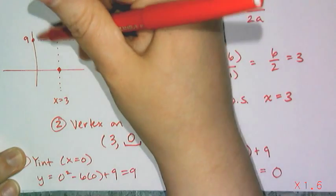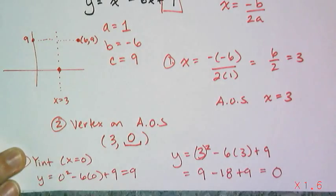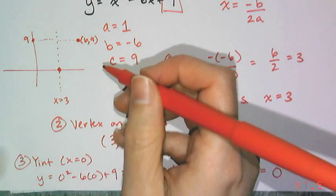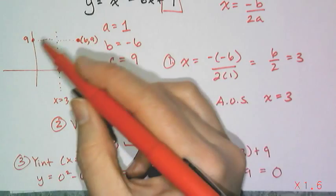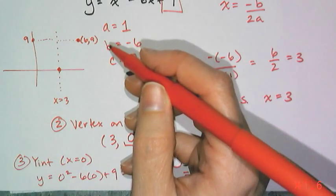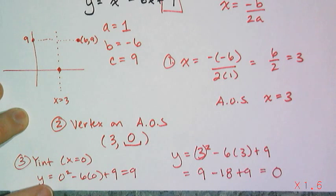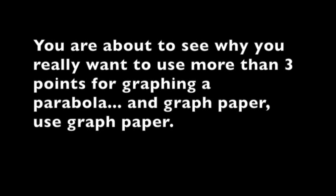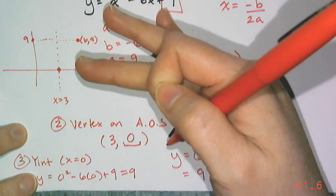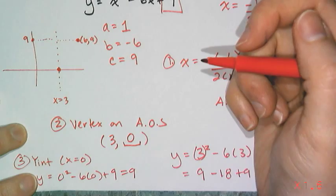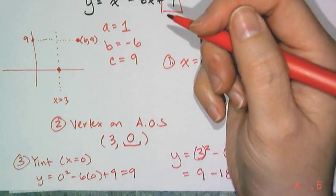And then of course I just have to sketch in my parabola. And it's much easier to sketch in if you actually use graph paper like you're supposed to for graphing. And so I have all the information I need. Just sketch the curve in, add some arrows, and label some axes.